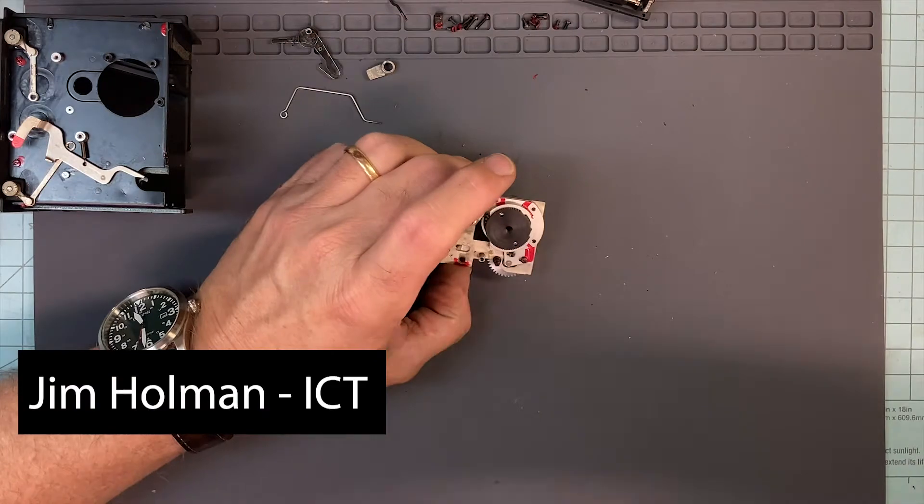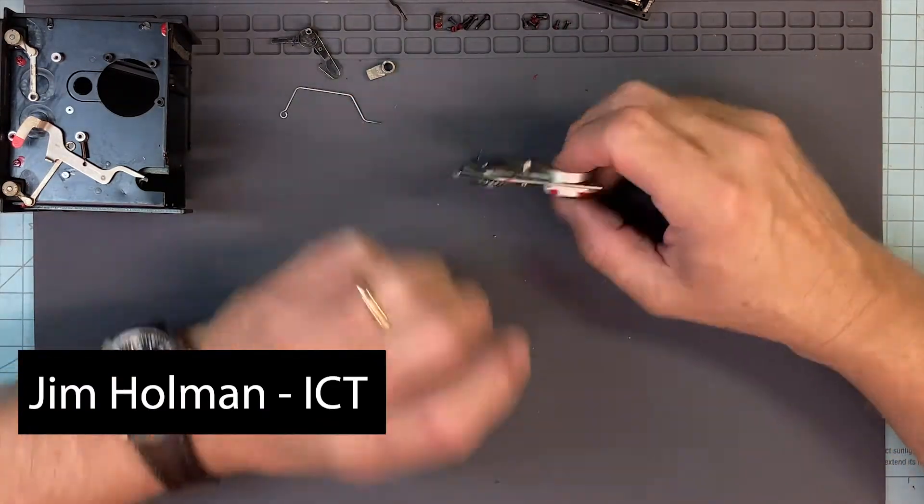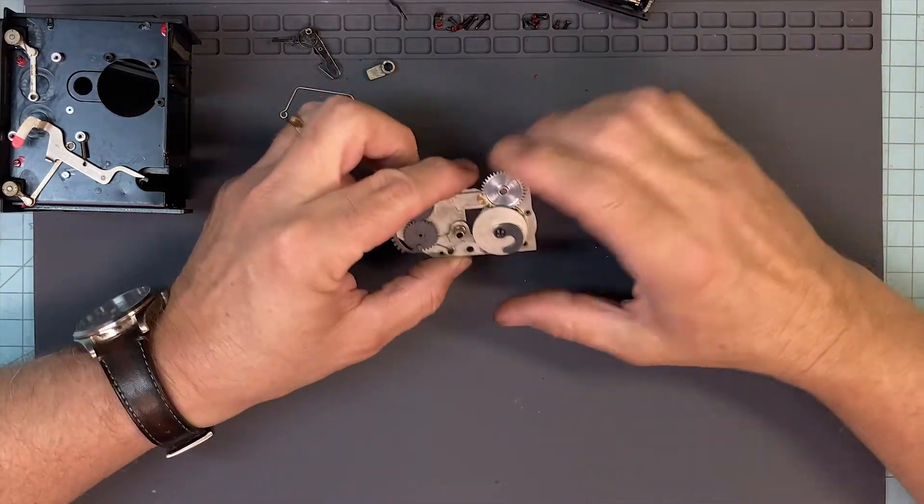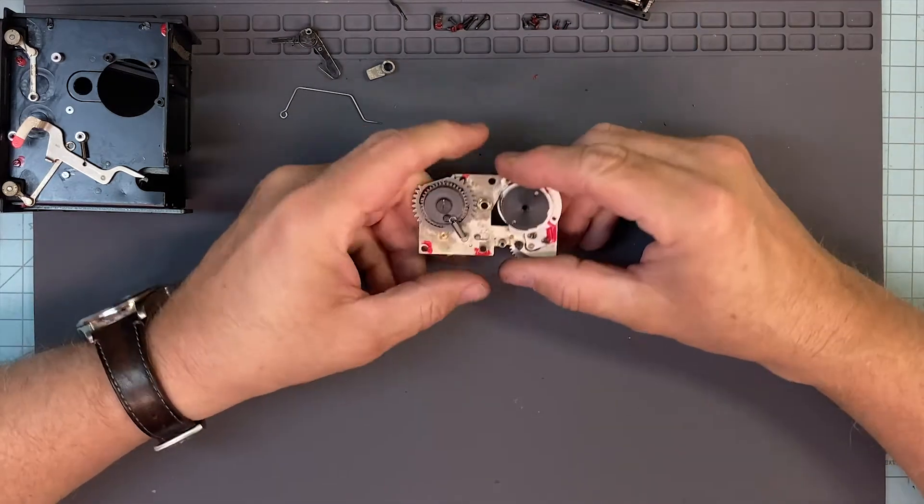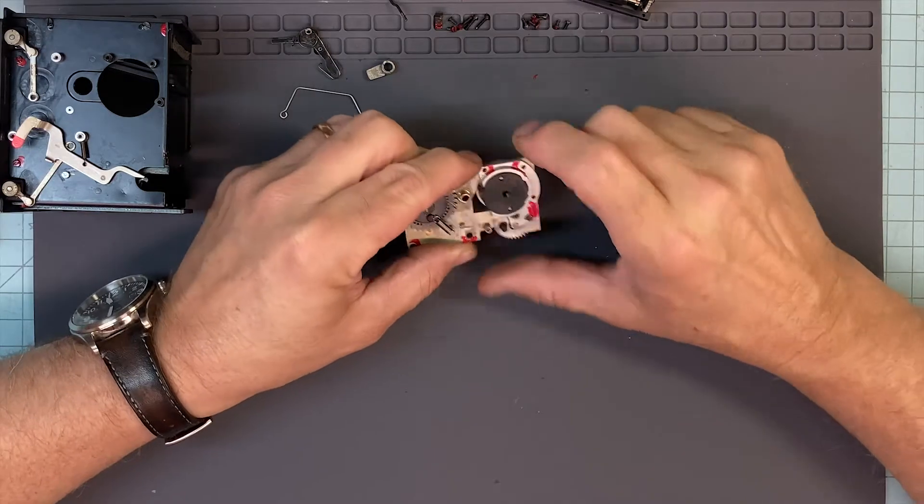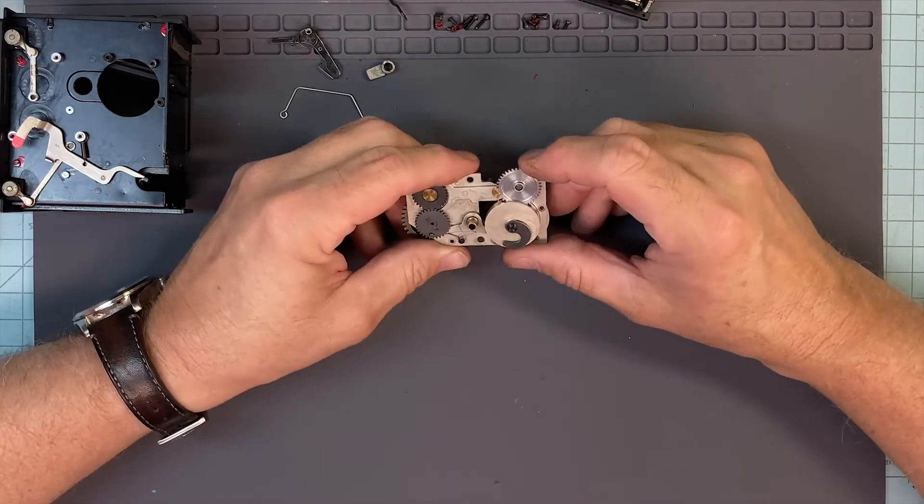Hello everyone, this is Jim from International Camera Techs, back with this Hasselblad. Last we left off, I went ahead and pulled this mechanism out. We're going to go through it, clean all this stuff, and lube it.